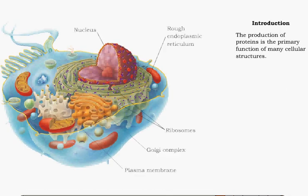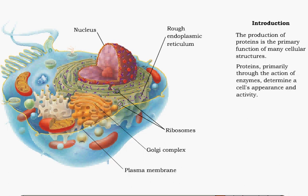The production of proteins, important in maintaining homeostasis, is the primary function of many cellular structures. Proteins, primarily through the action of enzymes, determine a cell's appearance and activity.